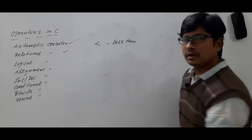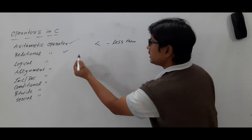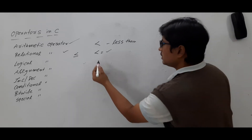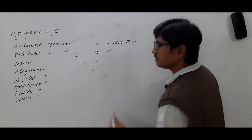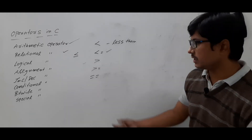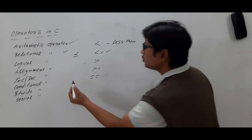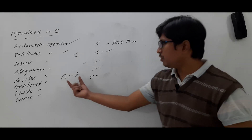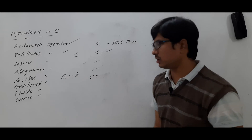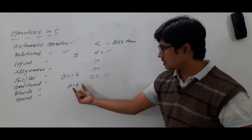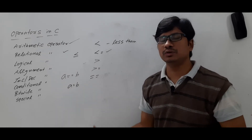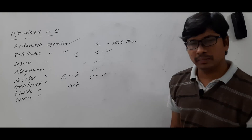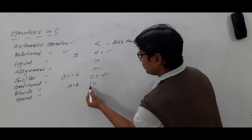We have less than or equal — in mathematics we write it differently but in C language you should write less than or equal using the symbols. We also have greater than, greater than or equal. For equal comparison, suppose you want to compare whether variable a equals variable b, in mathematics we write a equal to b, but in C if you want to compare two things whether they are equal or not, you use the double equals operator. If you want to check whether they are not equal, you write not equal.